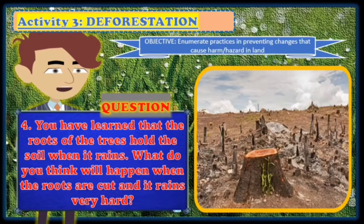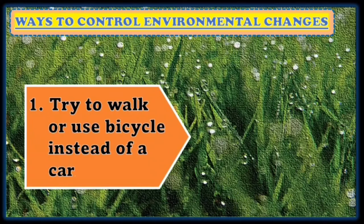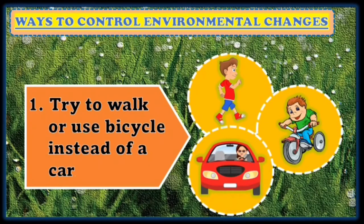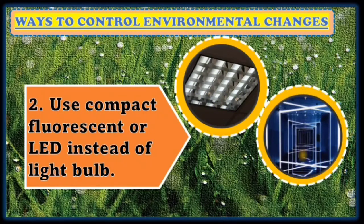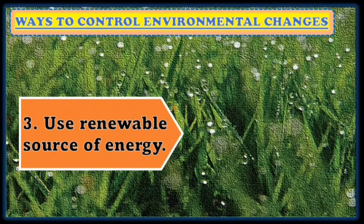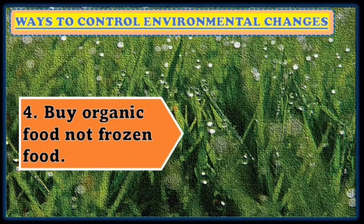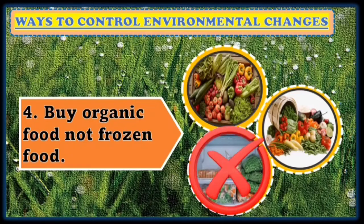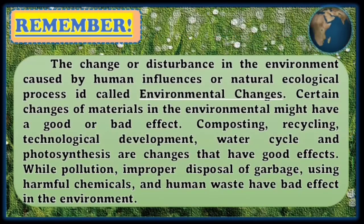We have ways to control environmental changes. Number one, try to walk or use a bicycle instead of a car. Number two, use compact fluorescent or LED lights instead of light bulbs. Number three, use renewable sources of energy. Number four, buy organic food, not frozen food. Number five, decompose kitchen waste.